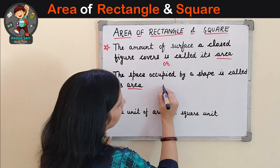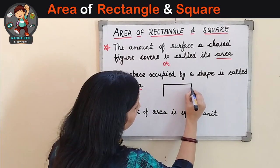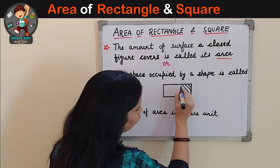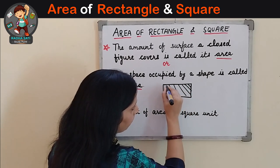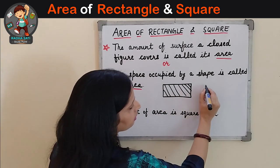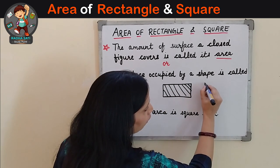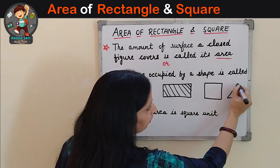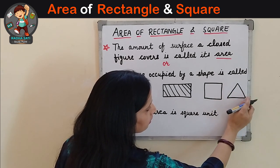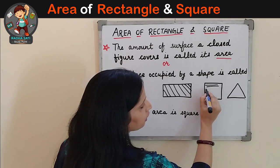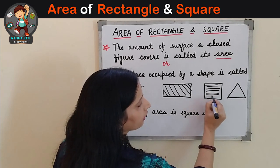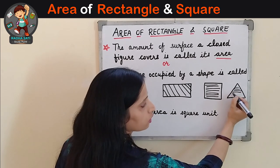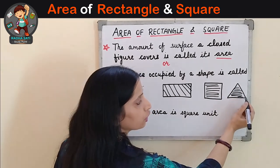For example, if I draw a rectangle here, then the area will be the space occupied by this shape. Same in the case of square or any closed figure — triangle — this means this area. This will be our area in the case of a triangle: the space occupied by the shape.